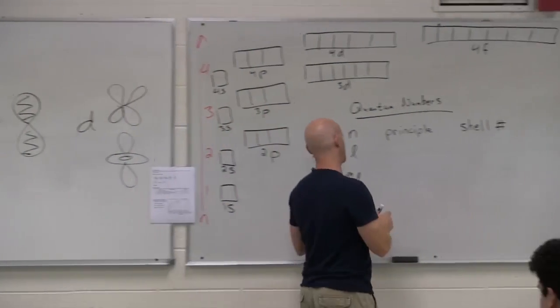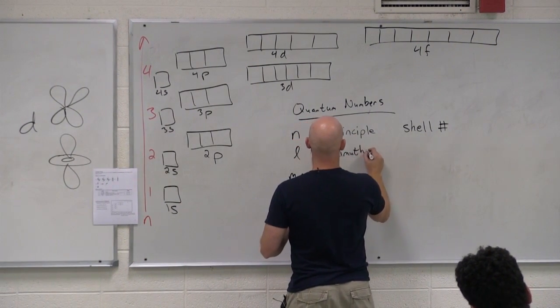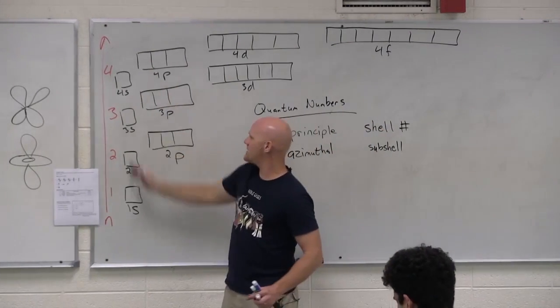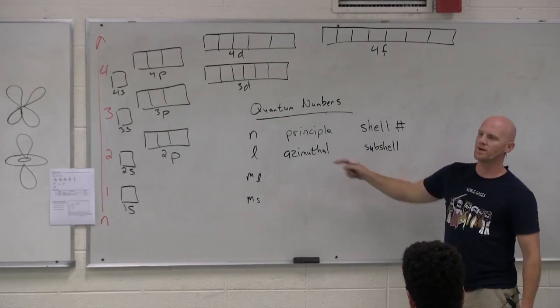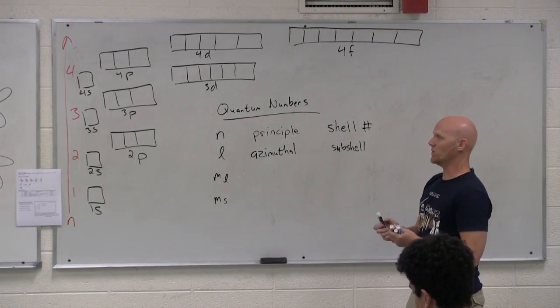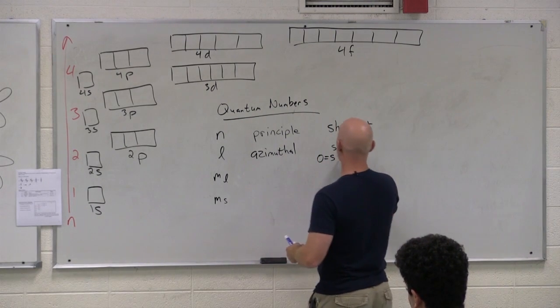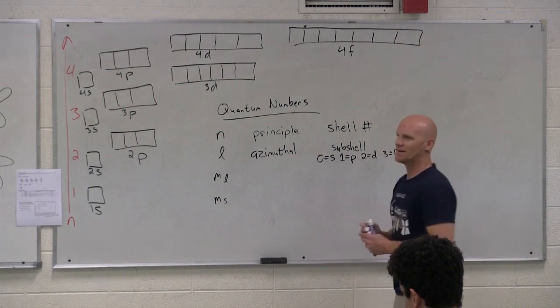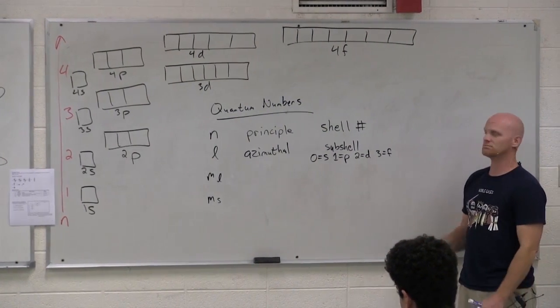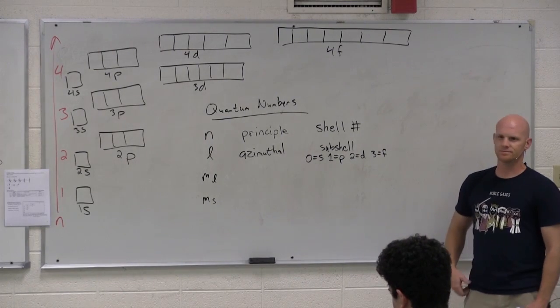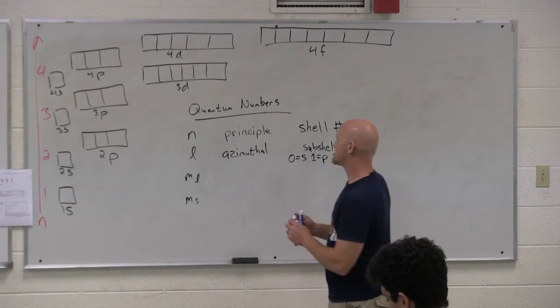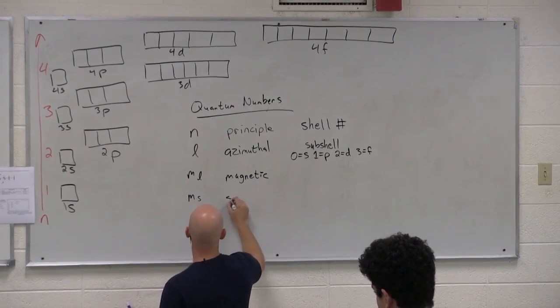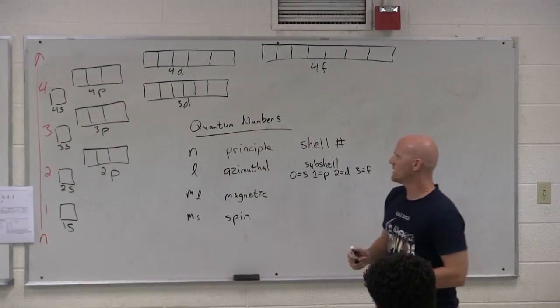Now L, on the other hand, L is what we call the azimuthal quantum number. Not a word you will commonly hear. And this is going to tell me the type of subshell, whether it's S, P, D, or F. That's what L is ultimately going to tell me. So in this case, we use it as a code. When L equals zero, that means S. When L equals one, that means P. When L equals two, that means D. And when L equals three, that means F. It's a code. So if I say L equals two, you're like D orbital or D subshell. If I say L equals one, you're like P subshell. L equals three, F subshell. It's a code. Cool. Then M sub L on your handout there. This is your magnetic quantum number. We'll come back to that in a second. Then M sub S we call your spin quantum number. Cool.